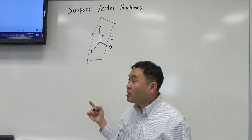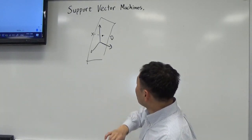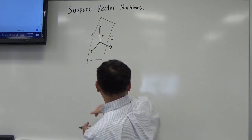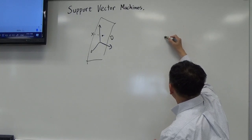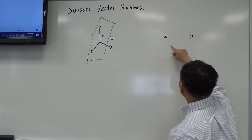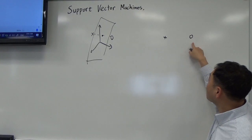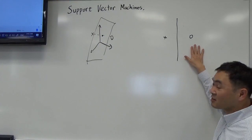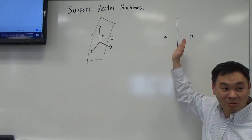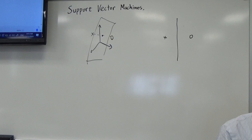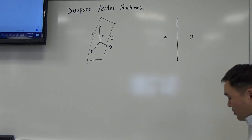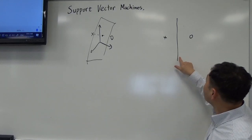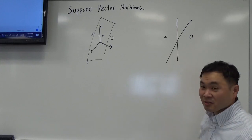If you view it perpendicularly so that it looks like two dimensions, we're merely trying to find the dividing line between them so that these two are classified. If it's on the right side, it's going to be one; on the left side, it'll be zero. And then what you want to say is: what makes this boundary better than another boundary like that?